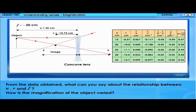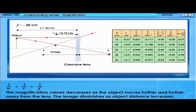From the data obtained, what can you say about the relationship between U, V, and F? How is the magnification of the object varied? 1 over U plus 1 over V equals 1 over F. The magnification values decrease as the object moves further and further away from the lens. The image diminishes as object distance increases.